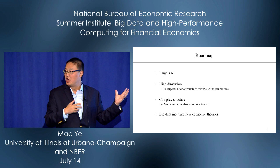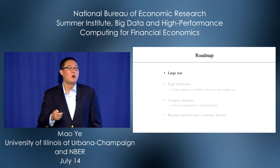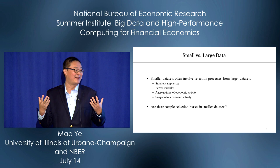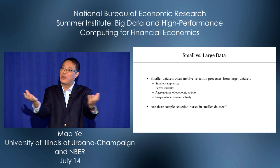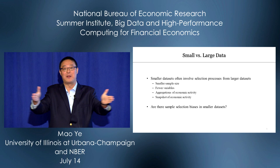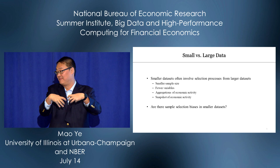Let's start with large size. The first question is: why do we have smaller datasets? Some datasets are naturally small, but others are small because we have a selection process to reduce the data size. For example, we can have a smaller sample size, fewer variables, aggregated economic activity, or snapshots. All these things reduce the size of data.